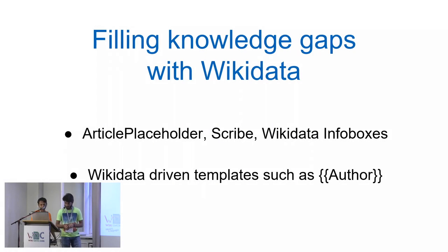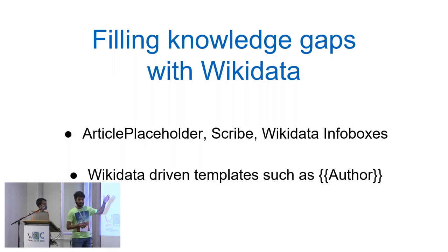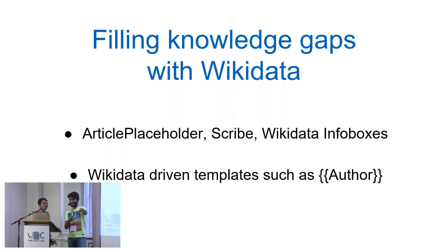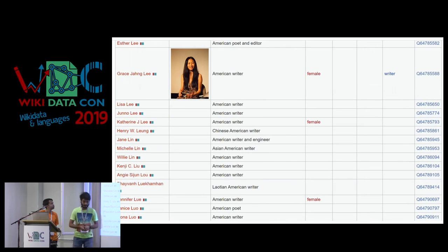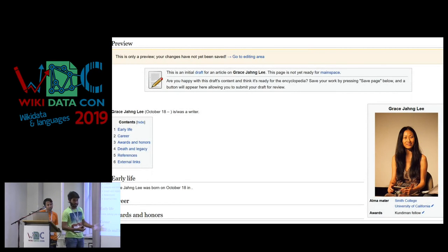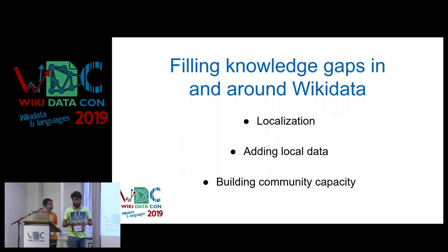Wikidata is helping in a number of ways in filling knowledge gaps on different Wikimedia projects. For example, the article placeholder, or another tool called Scribe is being built — Wikidata input boxes. There are also a lot of different templates which use Wikidata, and then there are new templates called Mbabel, which, along with ListJaribot, are used to make lists like these. If you click on one of the topics on this list, you get a draft article with some sentences and the info boxes from Wikidata.